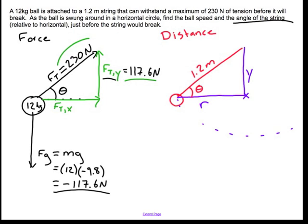So in order to find the FT_X component, what I'll do is I'll use the Pythagorean Theorem. I'll say the hypotenuse 230 squared is equal to 117.6 squared plus FT_X squared. And when you do that, you find that FT_X is equal to 197.7 Newtons. So I'll fill that in over here, 197.7 Newtons.